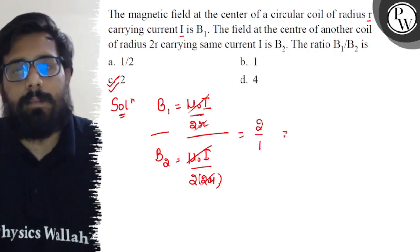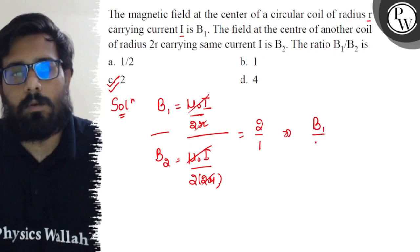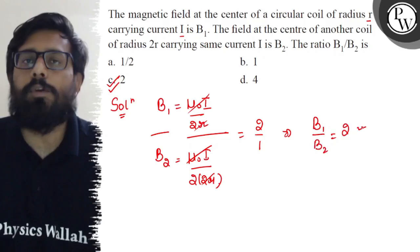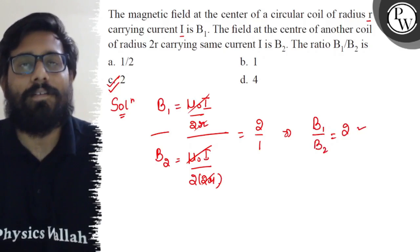The ratio of B₁ by B₂ comes to be 2 is to 1, so your answer is C option. C option is absolutely correct and I hope you got the concept of this question. All the very best!